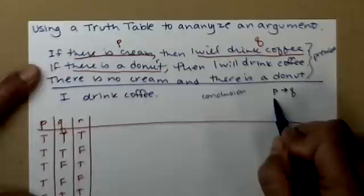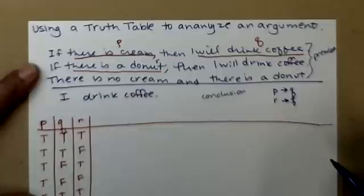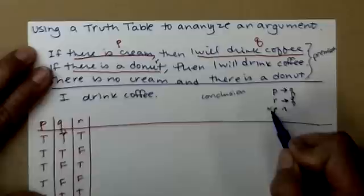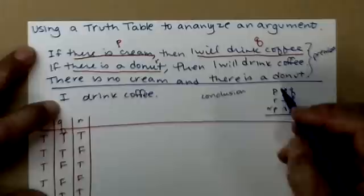If there is a donut, then I will drink coffee. So that's if R, then Q is my coffee statement. There is no cream, so not P. And there is a donut. That was my R. So not P and R. Therefore, I drink coffee. That's my Q.